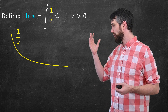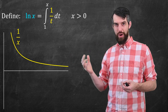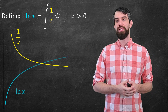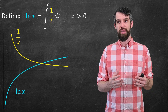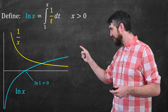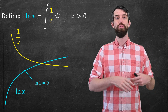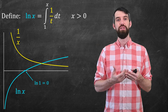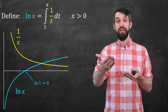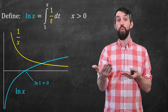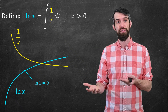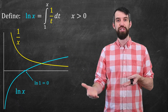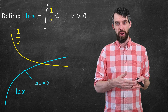For example, if this is the graph of 1 over x, then logarithm of x is just going to look like this. Let me begin at this point: logarithm of the value 1 is just an integral from 1 up to 1. The integral from 1 up to 1 is just 0 by definition. So the logarithm function at the value of 1 is just 0.